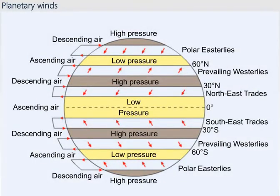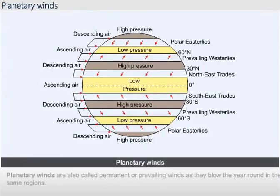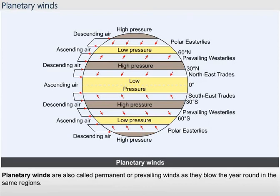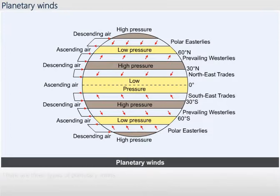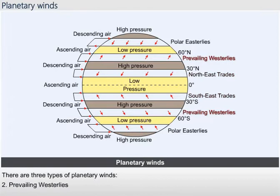Planetary winds are also called permanent or prevailing winds as they blow year-round in the same regions. There are three types of planetary winds: trade winds, prevailing westerlies, and polar winds.